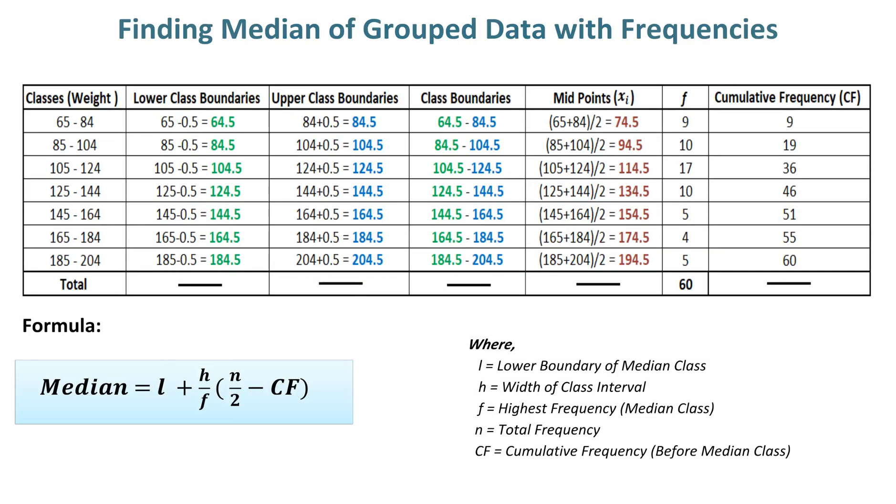Finding median of grouped data with frequencies. In order to find the median, you must know the formula, which requires: L, the lower boundary of the median class, and H, the width of the class interval.